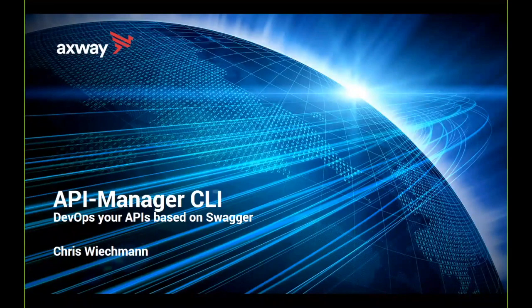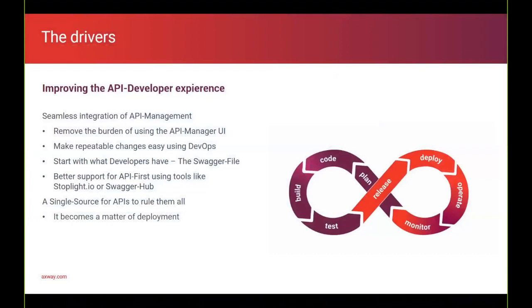Before I get started, I would like to talk about the main drivers. The main driver is really to be able to achieve the infinite DevOps loop. Today, it is a little bit difficult in API Manager to have that. An API developer, when he starts to create an API, it's very hard to import it once into the API Manager and then do all the necessary changes like adding tags, adding custom policies, adding a description, adding an image. Then his front-end API is basically ready to be tested — and then he realizes he made a mistake in the Swagger file and has to restart again. This is a pain. That's why the second bullet is making these repeatable changes very easy, using a simple DevOps approach.